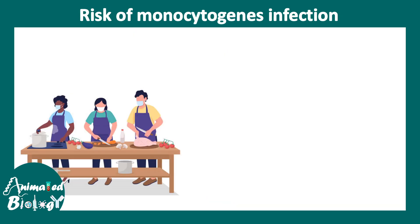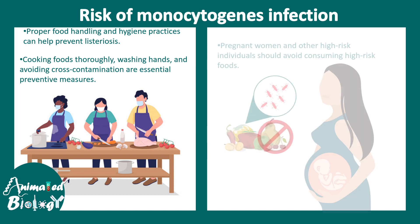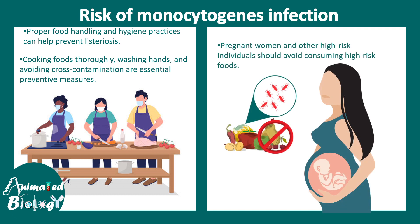Listeria monocytogenes infection commonly comes from hygiene issues while preparing food or consuming street food. Handwashing and cross-contamination are big issues. Overall hygiene has to be good to prevent infection. Pregnant women are at higher risk and should be careful about consuming specific vegetables or dairy products, ensuring they are pasteurized, as non-pasteurized dairy products may be contaminated with many bacteria.